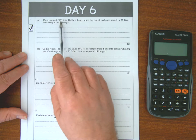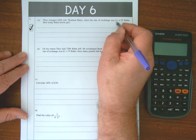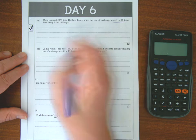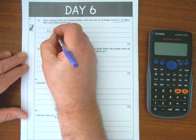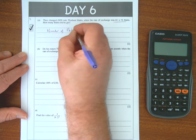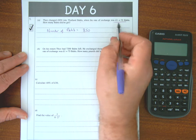Right, so we're changing pounds into foreign money. So when I change pounds into foreign money, I multiply by the exchange rate. So the number of Baht would be 850. For each of those pounds,